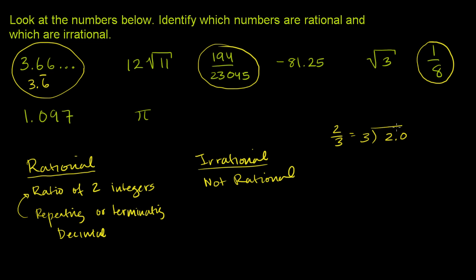3 goes into 2, no times. But it goes into 20 six times. 6 times 3 is 18. You have a remainder of 2. Bring down another 0. 3 goes into 20 six times. I think you see a pattern here.